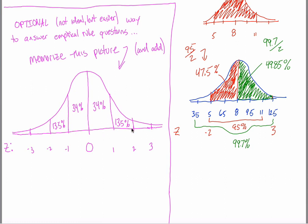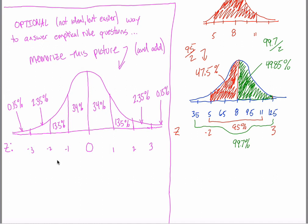You can continue with this logic to figure out the area of each of these different little regions. This one ends up being 2.35%, and this one ends up being 0.15%. Because of symmetry, these have to be the exact same — also 2.35% and 0.15%. If you can memorize this picture, you can answer any empirical rule question. It's not the best way to do it, but it'll work.